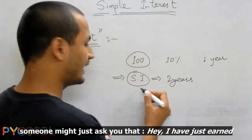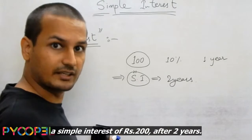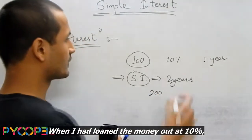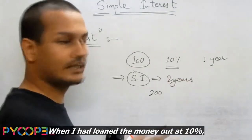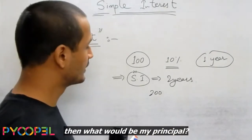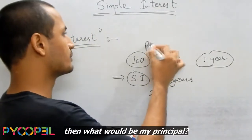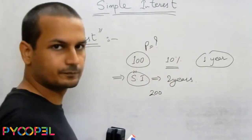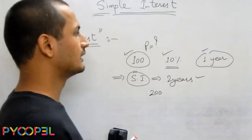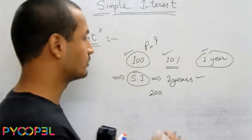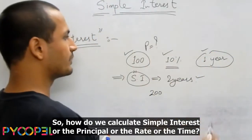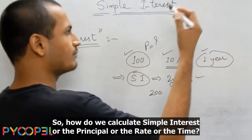Or someone might ask: I have earned a simple interest of 200 rupees after 2 years, when I had loaned the money out at 10% — what would be my principal? Quantities like principal, interest, rate, and time will be asked in questions. So how do we calculate simple interest, or the principal, or the rate, or the time?